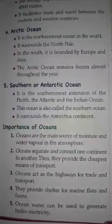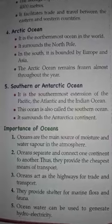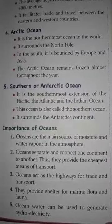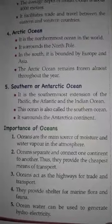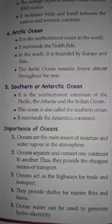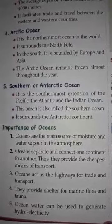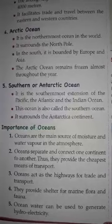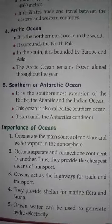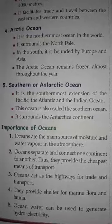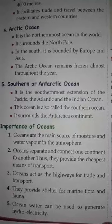Oceans have enormous mineral and chemical wealth. A variety of dissolved salts like sodium chloride, magnesium chloride, potassium chloride, etc. are found in plenty. Oil and gas are important fuels obtained from oceans. More than 100 countries at present are extracting oil and gas from continental shelves of oceans. The large part of the world's oil production comes from offshore fields. Bombay High is an important offshore oil-producing area of India.